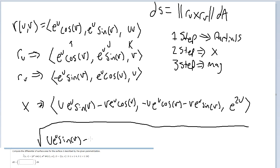So it's gonna be like u e^u sine v minus v e^u cosine v squared plus negative u e^u cosine v minus v e^u sine v squared.